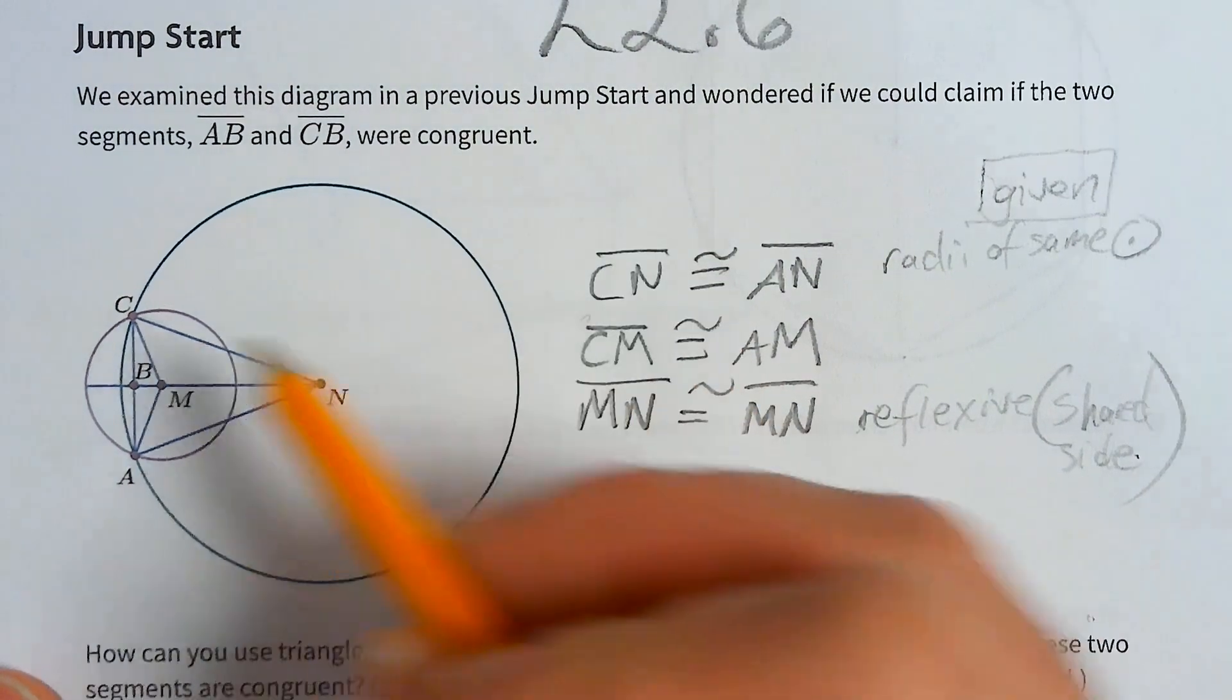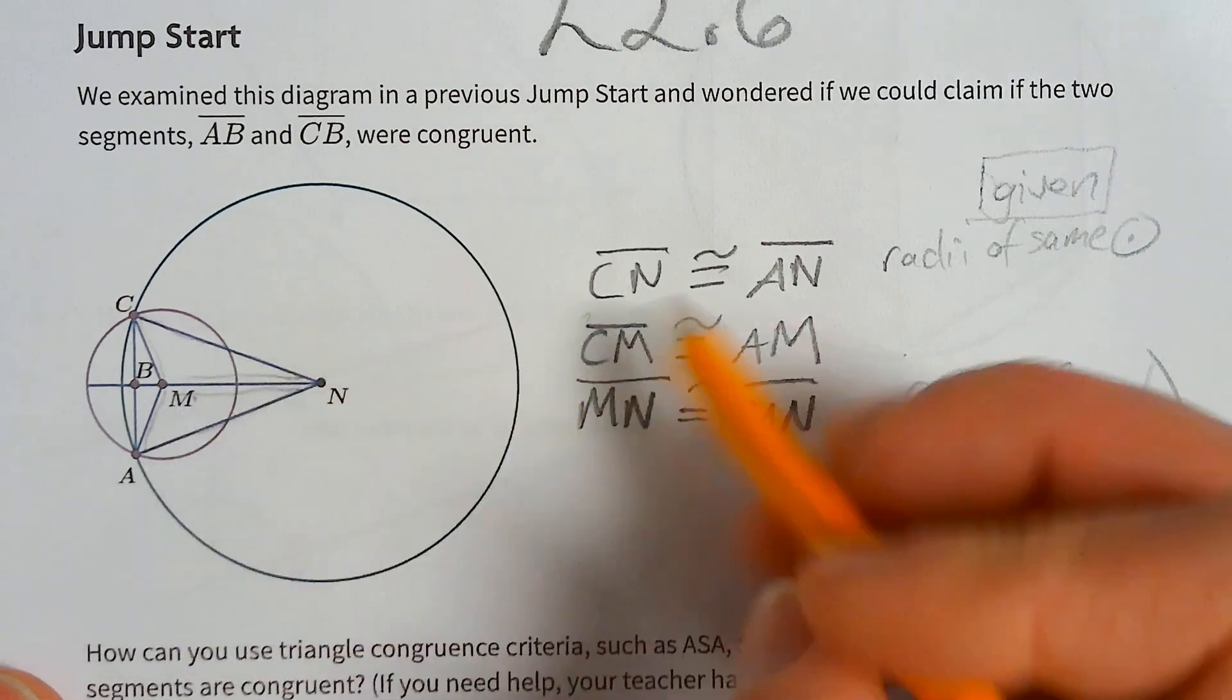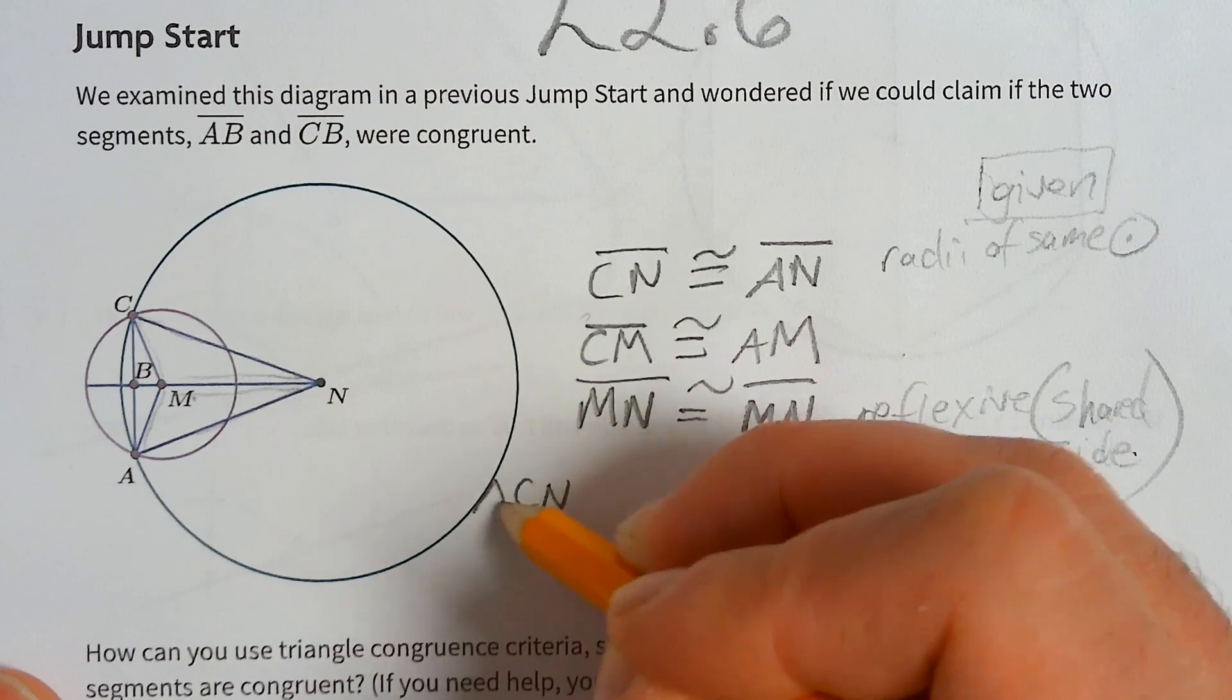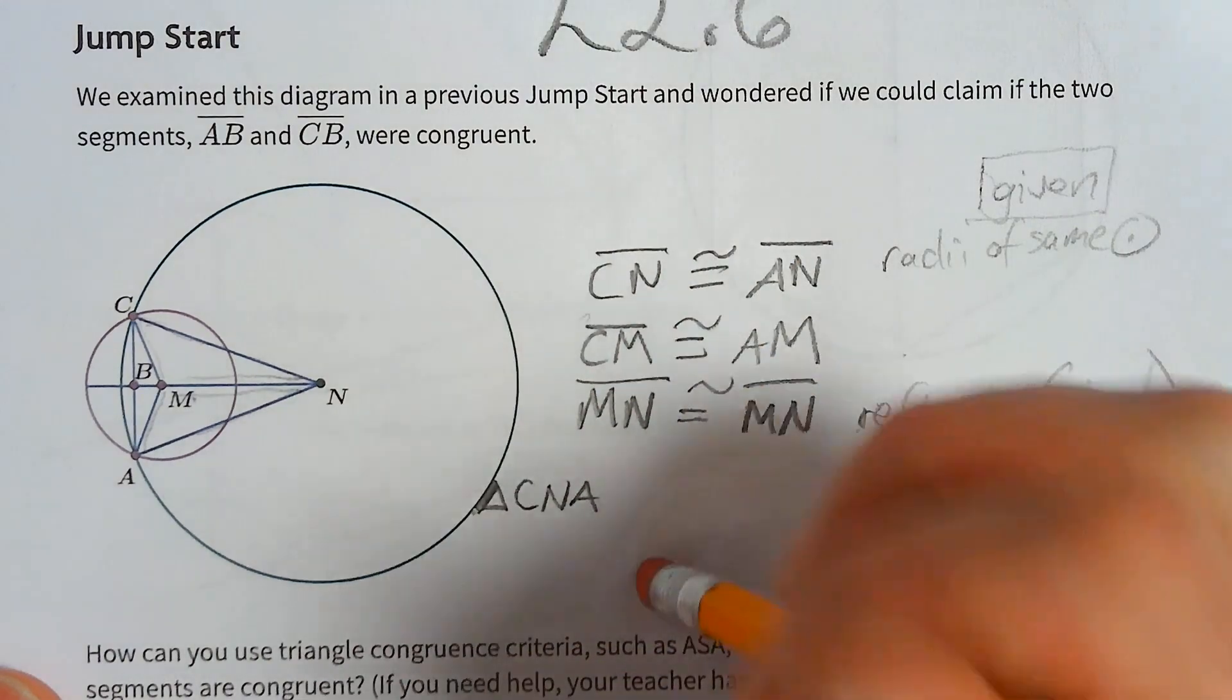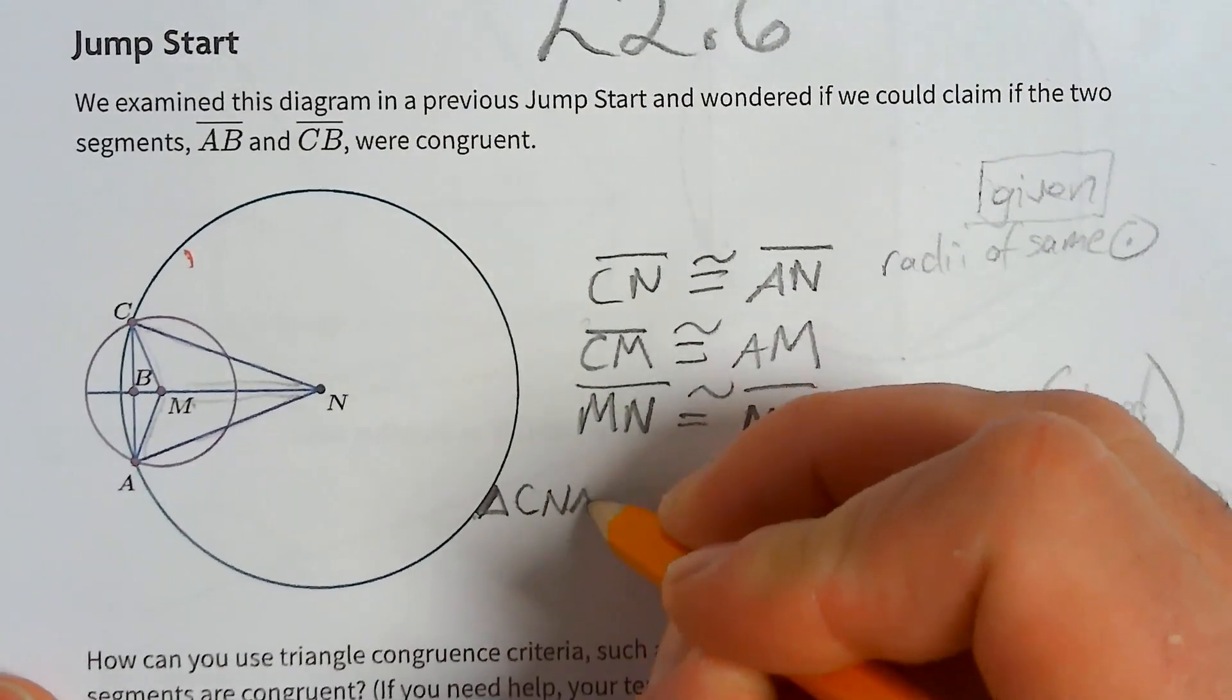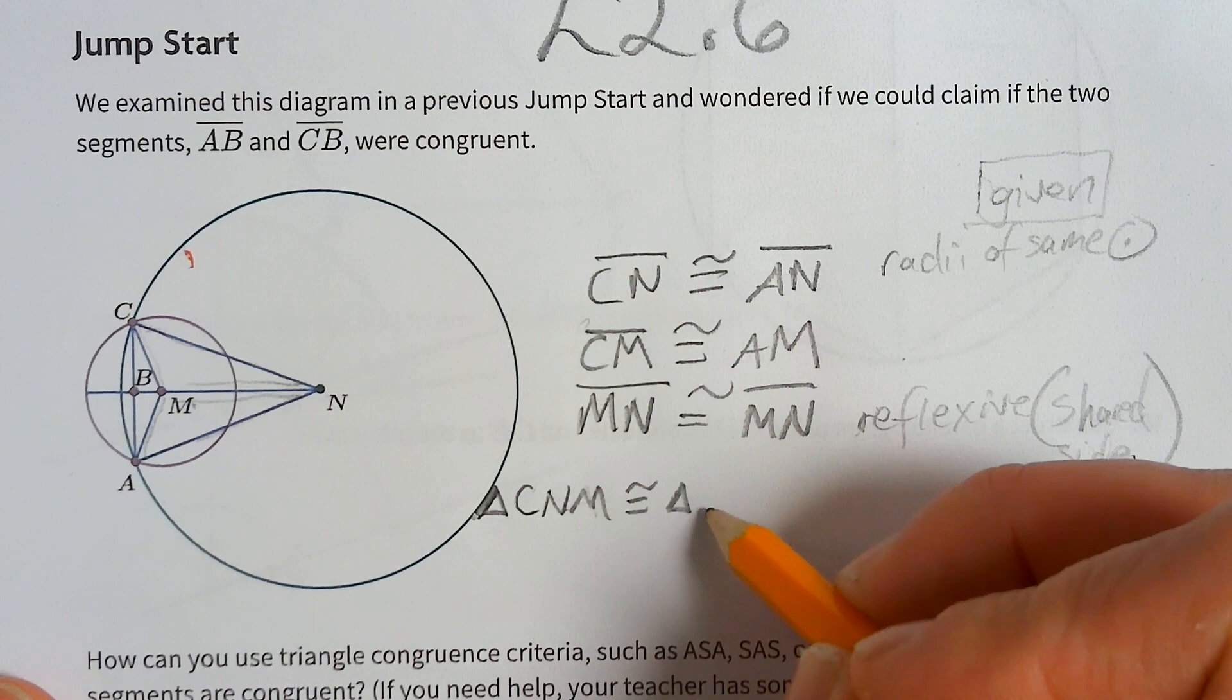Okay, so now we have side side side for these two triangles, these arrowy ones. Okay, so therefore they're the same. So I'll call one triangle, triangle CNM, nope that's not right, C and M, A and M.